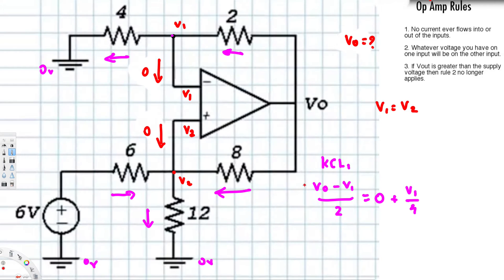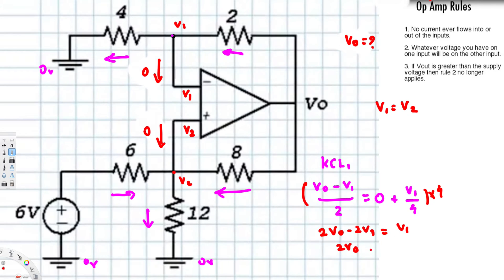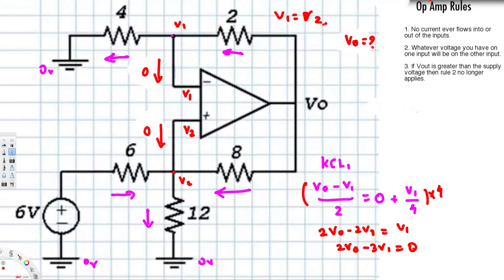To simplify, we multiply everything by 4 to get rid of the denominators. This gives us 2V-naught minus 2V1 equals V1. Simplifying further: 2V-naught minus 3V1 equals zero. That is our equation for the first node.